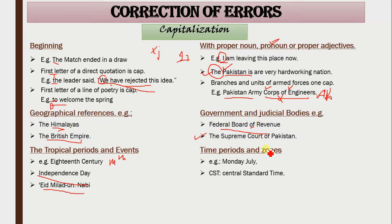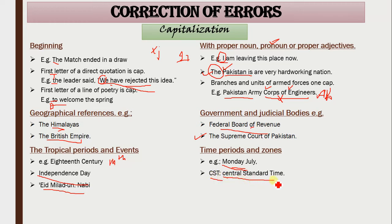Time periods and zones: all names of months and weekdays are always capitalized. Also, abbreviations such as CST — Central Standard Time — the C would be capitalized. All full forms of abbreviations need to be written in capital letters.